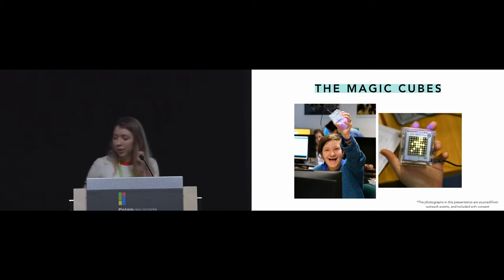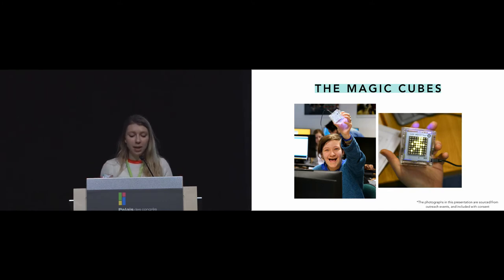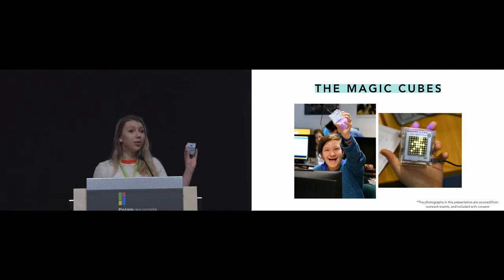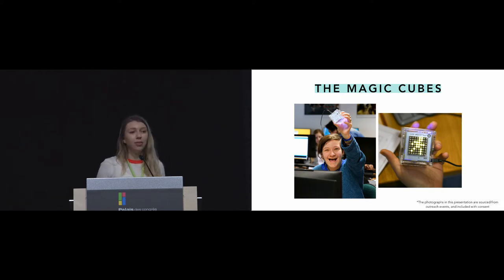To do this we used the Magic Cubes toolkit, which is an Arduino-based physical toolkit for learning about sensors, actuators, and wireless connectivity in different and engaging ways. Designed at the UCL Interaction Center, it takes the form of a physical hand-sized cube and gives rise to learning not just about electronic components but also computational thinking principles like algorithmic thinking and debugging, through a variety of tasks including making, discovery, and programming.